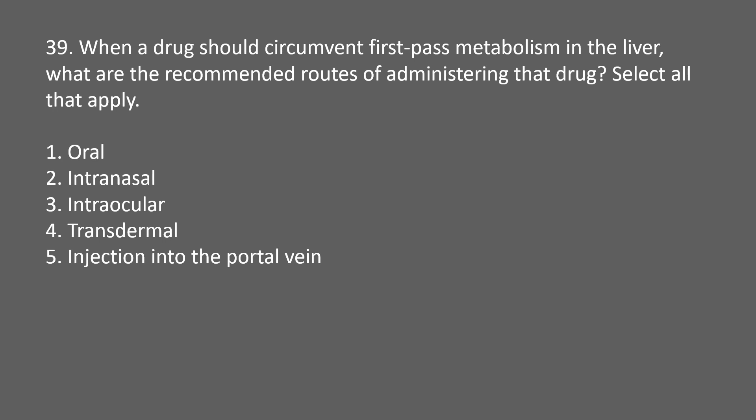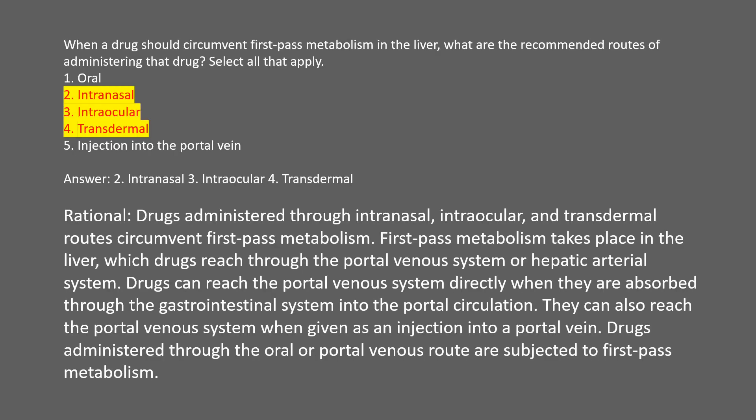When a drug should circumvent first-pass metabolism in the liver, what are the recommended routes of administration? Select all that apply. Answer: 2. Intranasal. 3. Intraocular. 4. Transdermal. Rational: drugs administered through intranasal, intraocular, and transdermal routes circumvent first-pass metabolism. Oral and portal vein injection routes are subjected to first-pass metabolism because drugs reach the liver through the portal venous system.